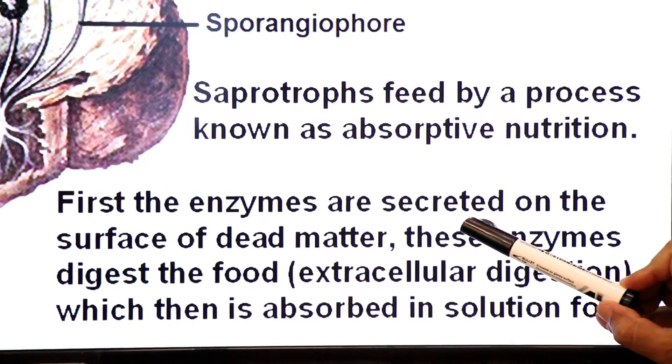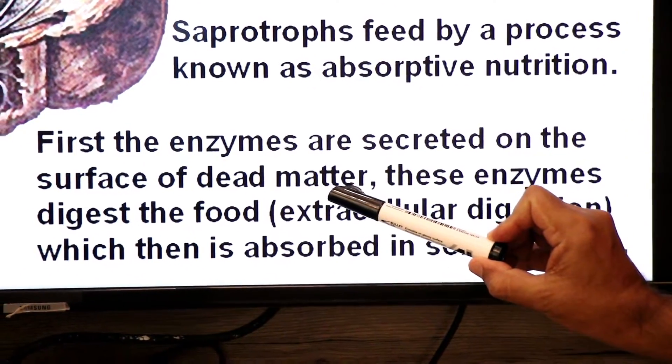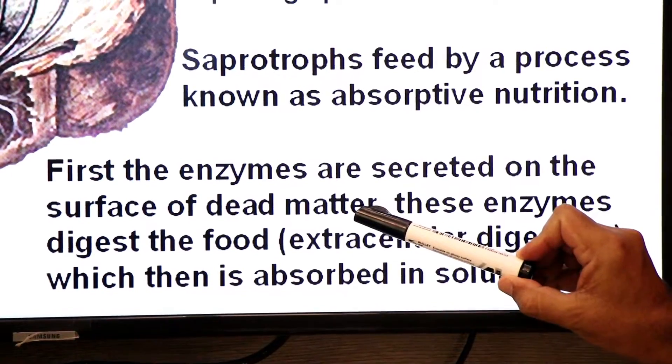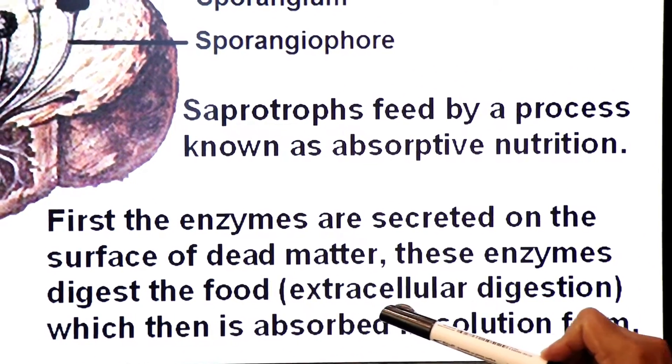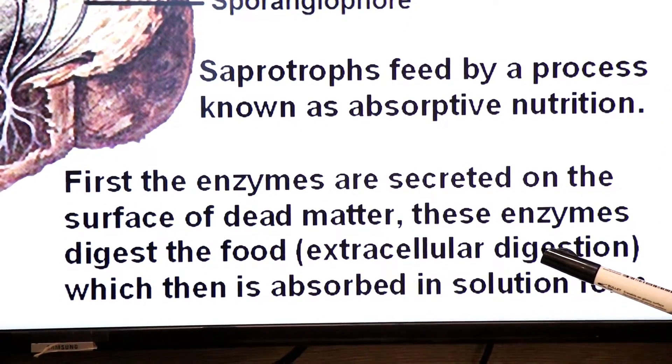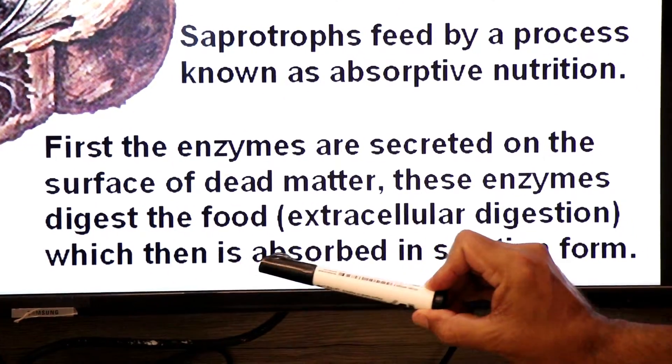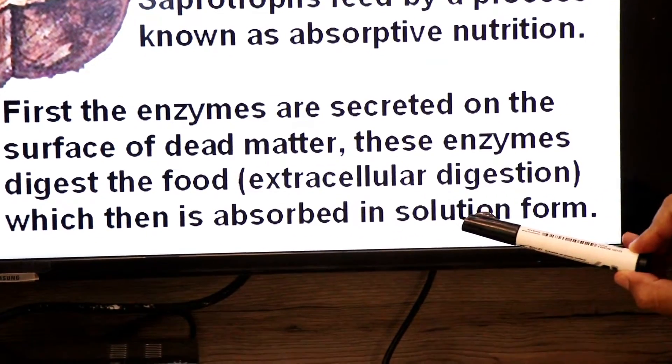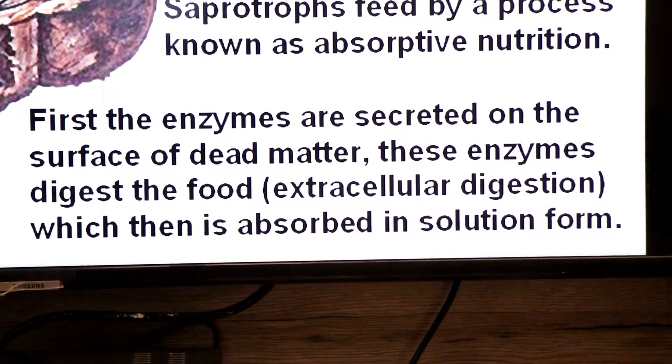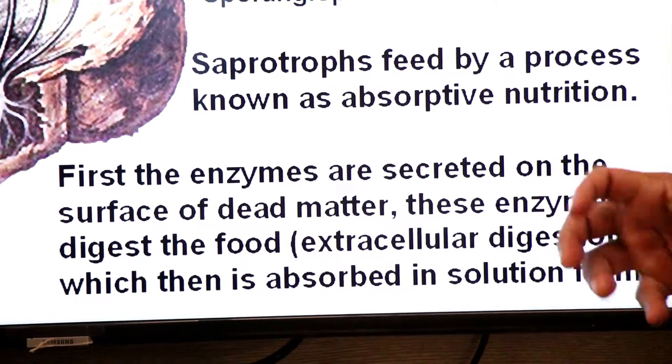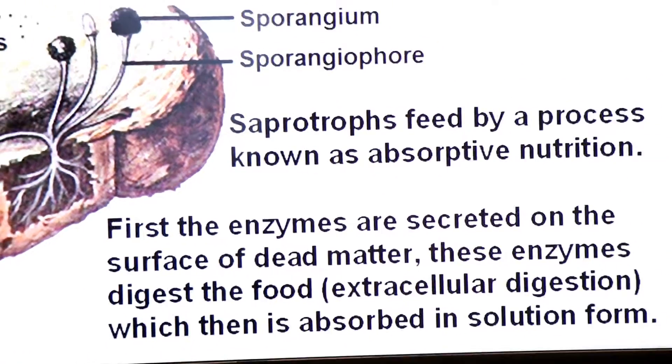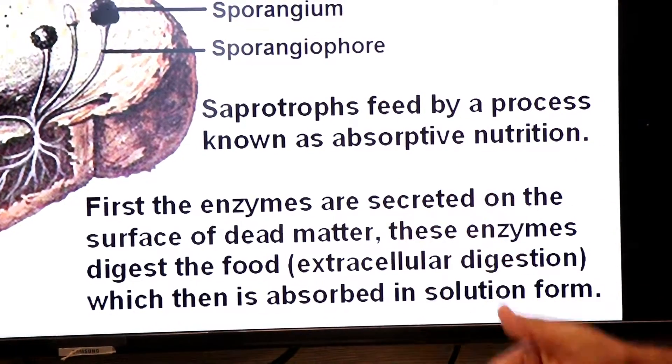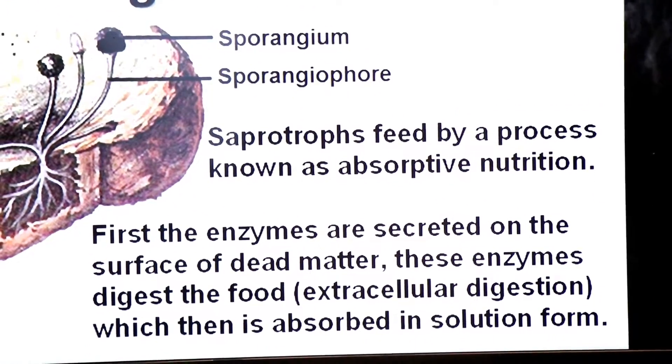Enzymes are secreted on the surface of dead matter. These enzymes digest the food, extracellular digestion which takes place outside the cell, which is then absorbed in solution form. They digest the food first and then absorb it in the solution form. This is called absorptive nutrition and these organisms are called absorptive heterotrophs.